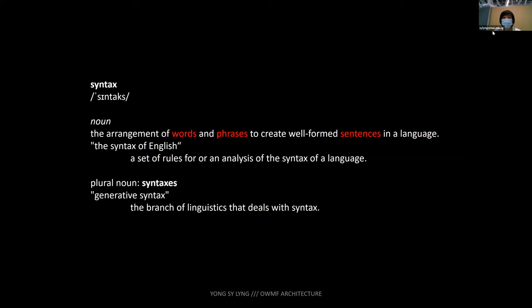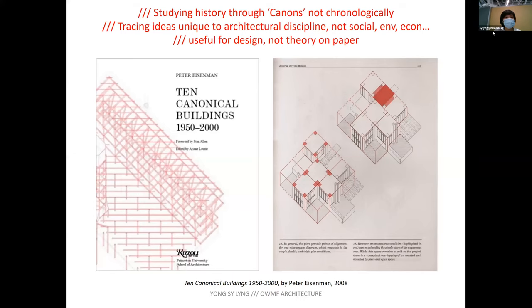Another idea is from Peter Eisenman — studying history not chronologically or narratively, but through canons. Canons are a few buildings from every era that cause critical change to the discipline: the transformation of new ideas. These ideas are unique to the architecture discipline.